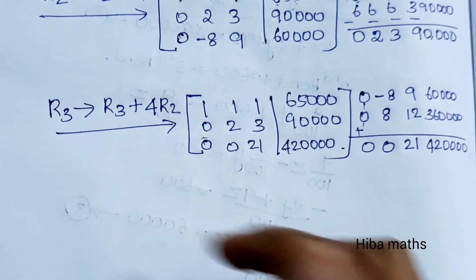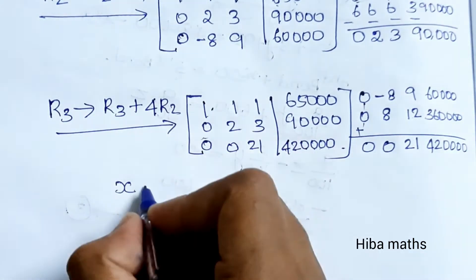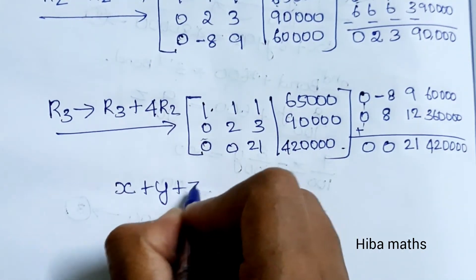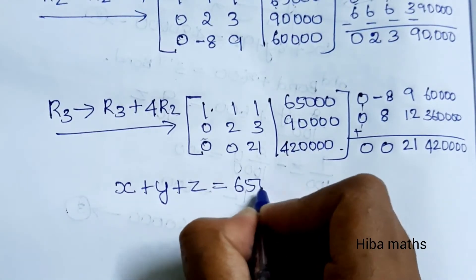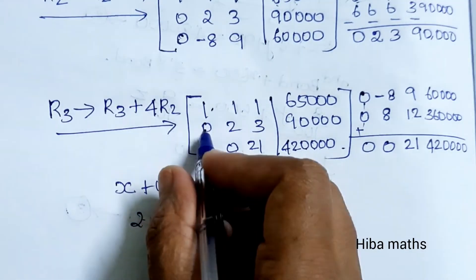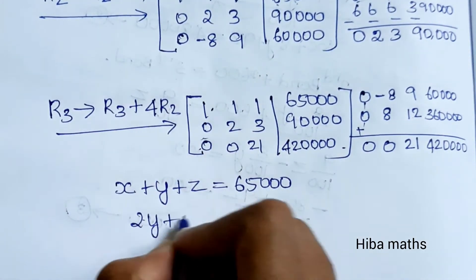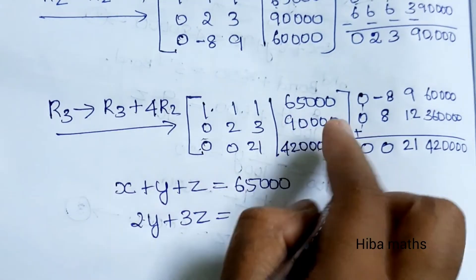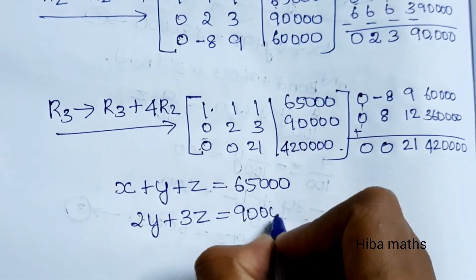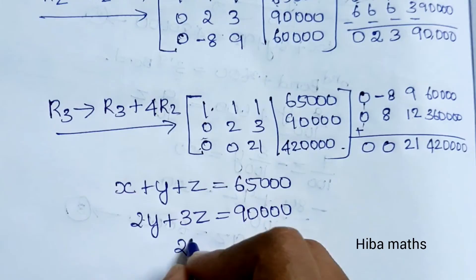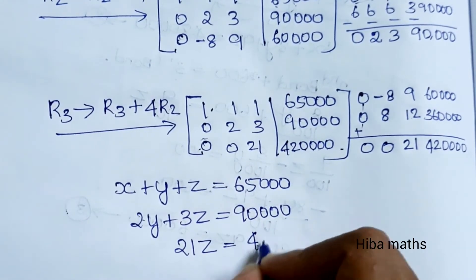From the upper triangular matrix, the equations for back substitution are: x + y + z = 65,000; 2y + 3z = 90,000; and 21z = 4,20,000. Solving the third equation gives z = 4,20,000 ÷ 21 = 20,000.